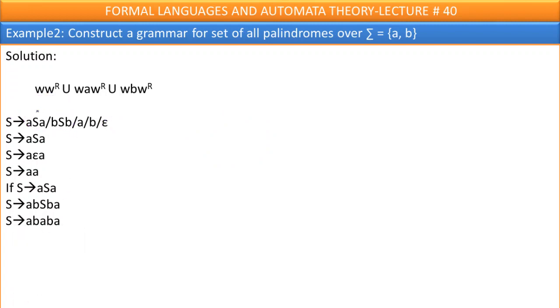Instead of epsilon, if I consider S goes to a or S goes to b, I will get odd length palindromes. For example, S goes to aSa. In the place of S, if I write a, what will I get? A, a, a. This is odd length palindrome.